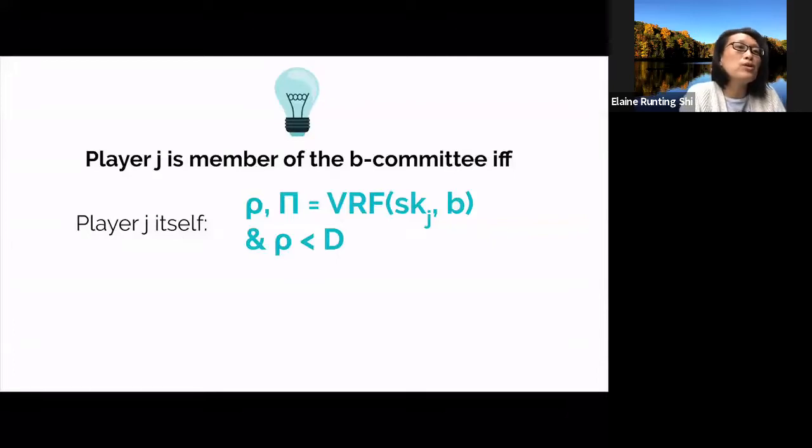To achieve this, we will use a verifiable random function, or VRF, to determine committee membership. Recall that the VRF is a pseudo-random function, such that one can evaluate the function using a secret key, but the outcome can be verified with the corresponding public key. Importantly, without the secret key, the evaluation outcome cannot be predicted in advance, and is basically indistinguishable from a random string.